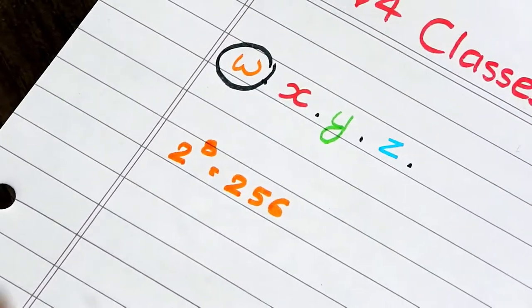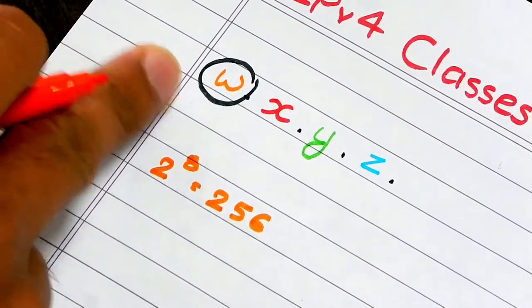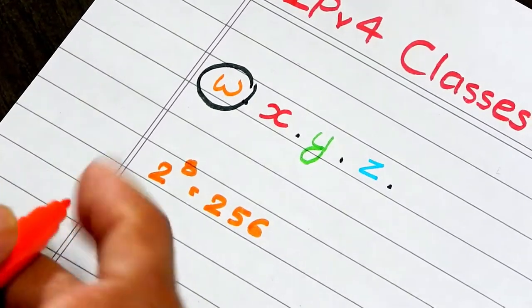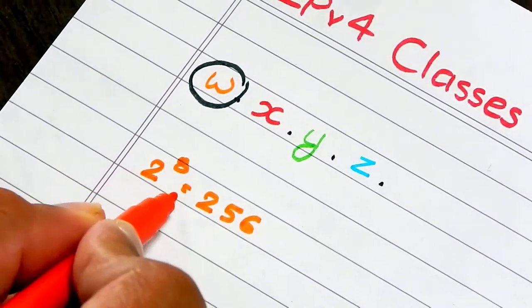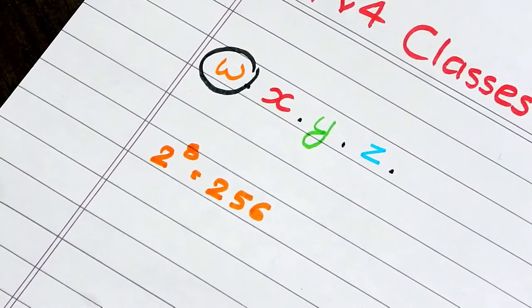We are taking the first octet of the IPv4 address. Here, the first octet contains 8 bits. So, we will get 2 raised to 8 is equal to 256 combinations. So, the range will be 0 to 255.